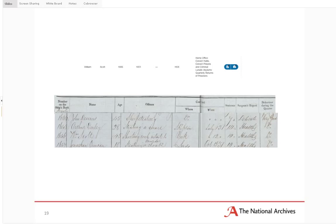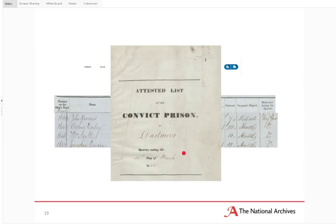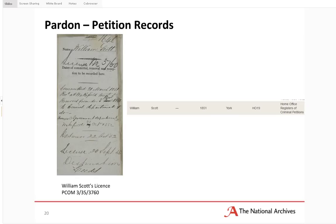There are a number of records in the series HO 8, which gives lists of convicts on hulks, in convict prisons, and in lunatic asylums — year by year. We can see Scott held in Dartmoor from 1853: shooting with attempted murder, tried at York, a sentence of 10 years. It also records that his health was good and his conduct very good. Scott was also actually released early. You can see on Find My Past the front cover of the HO 8 list — flicking back through the images on Find My Past you can find the cover page to identify which prison you're dealing with.